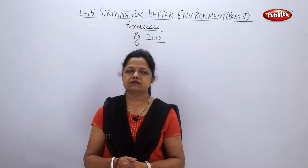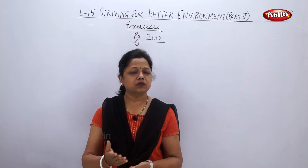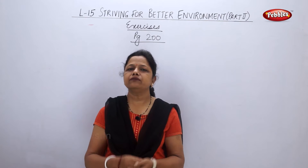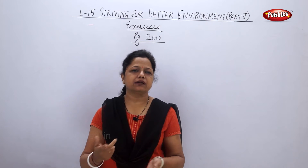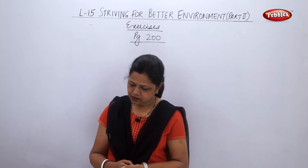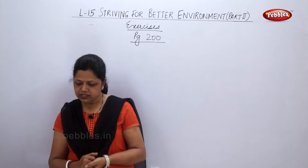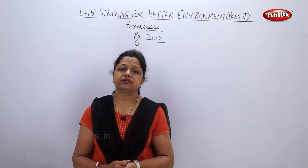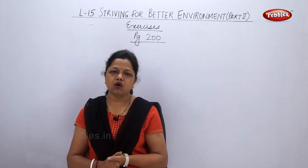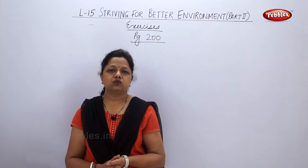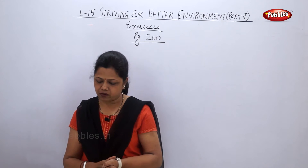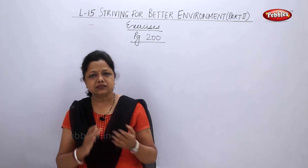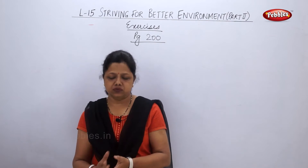Let's discuss the question answers given on page 200 of your textbook. We'll take the questions one by one and try to recollect what we have studied. First question: what is sustainable use? Sustainable use is for the development and conservation of our environment — to reduce the wastage of the various raw materials which we are making use of. This is called sustainable use.